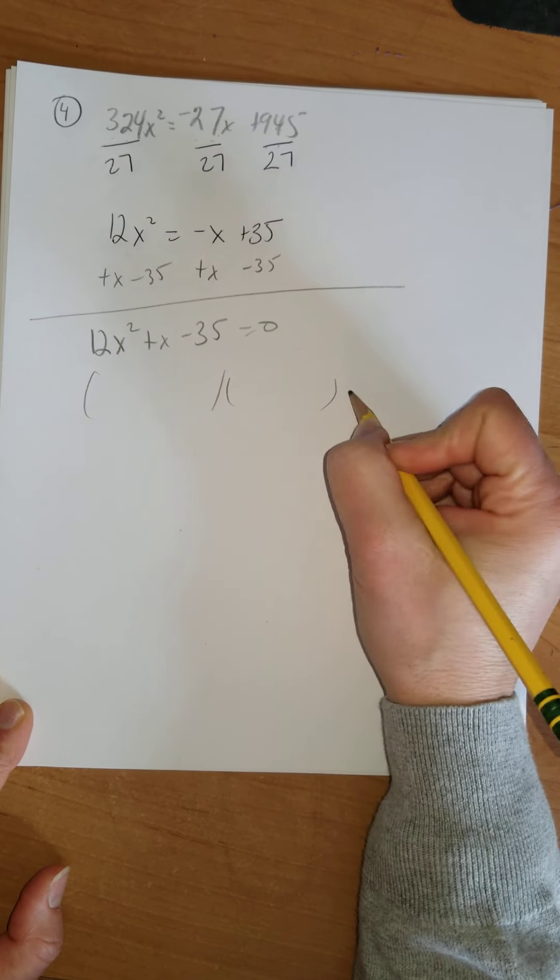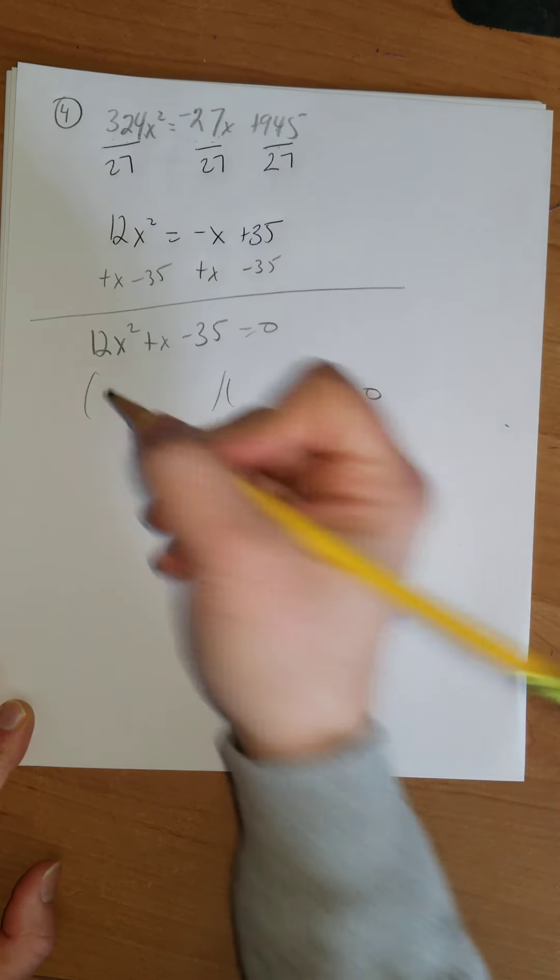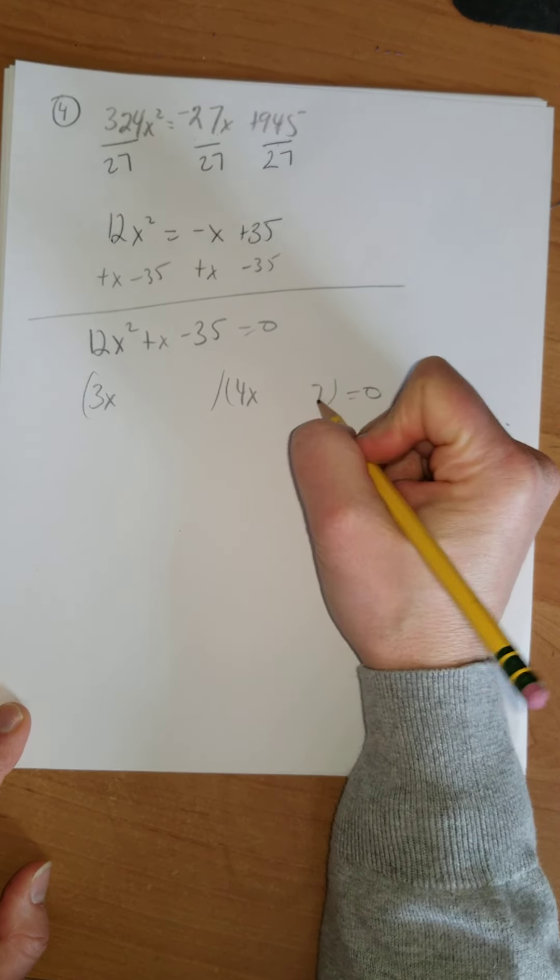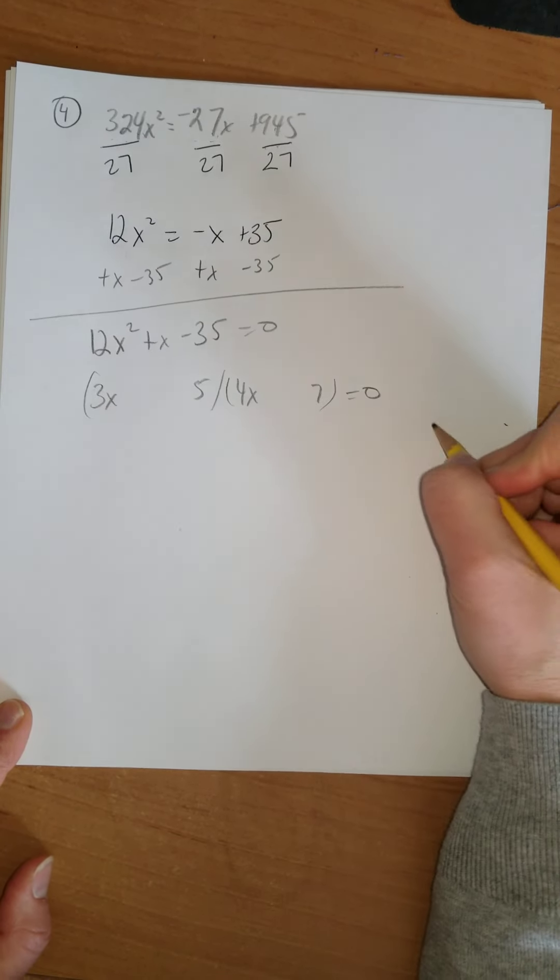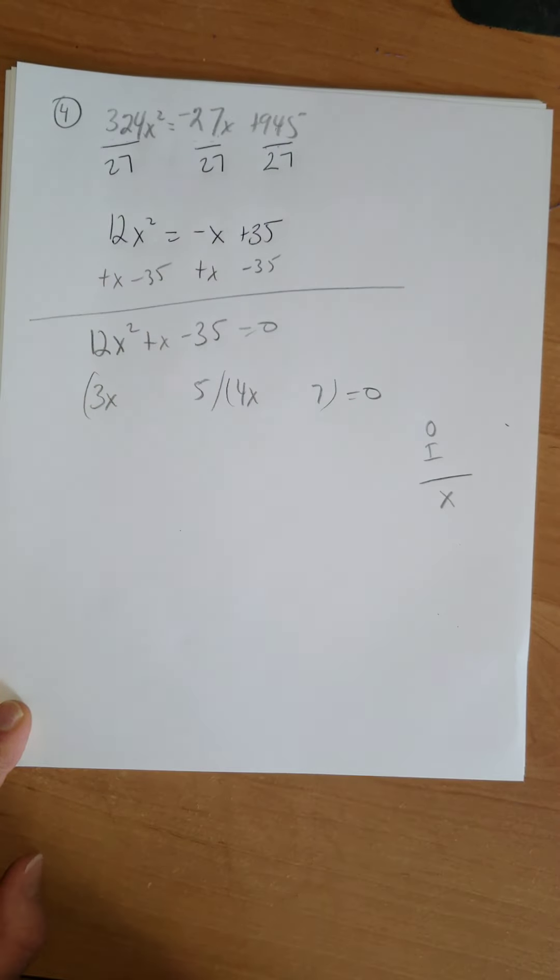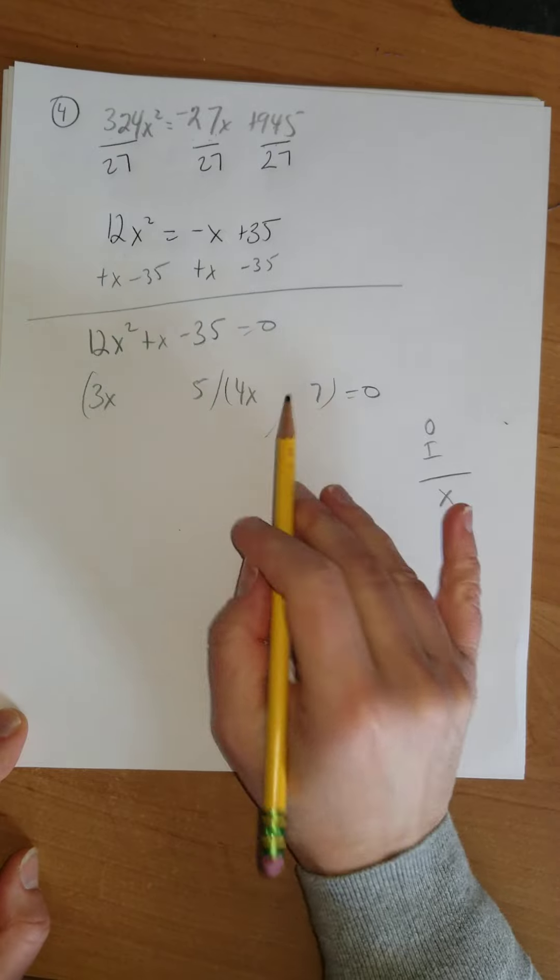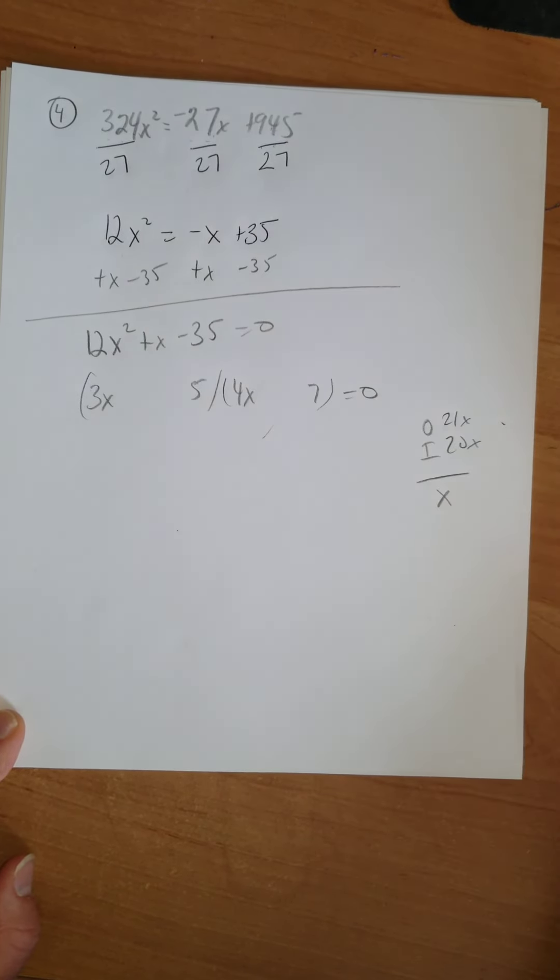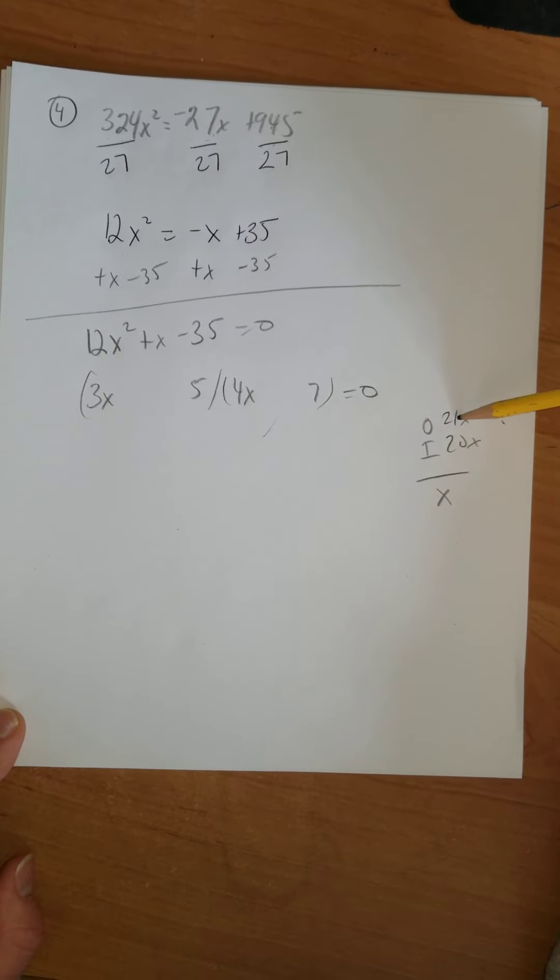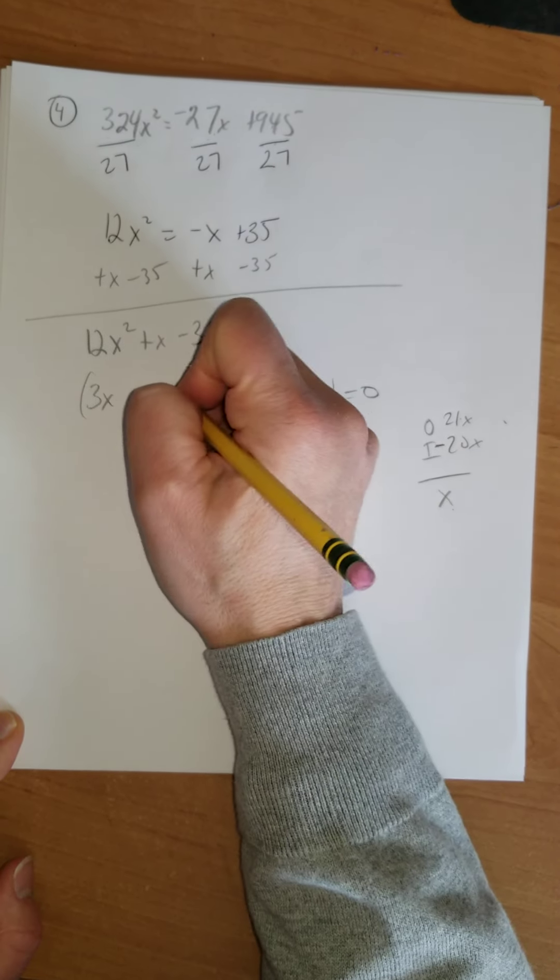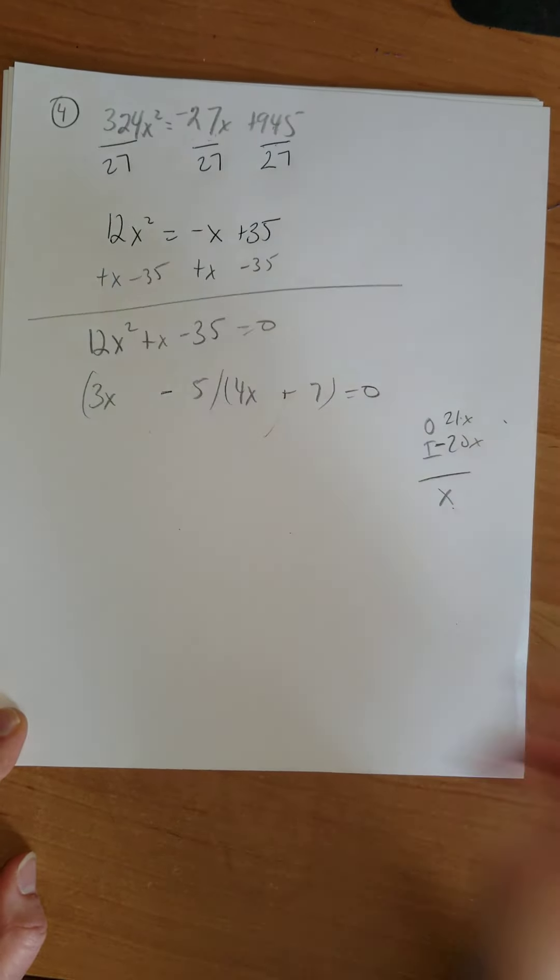Again, I want to try to factor this thing. 12x² - let's go with a 3x and a 4x. 35 is probably going to be 7 and 5. The outside and inside has to be an x. And the signs are going to be different since it's negative 35. On the outside, I have a 21x. On the inside, I have a 20x. I got lucky again. Can a 21x and a 20x be an x with different signs? Yep. Minus 20, so minus 20 would come here. This would be plus 21.